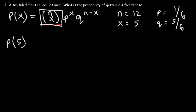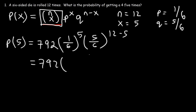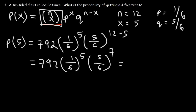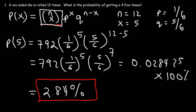So P of x, where x is 5, equals 792 times p (which is 1/6) raised to the 5th power, times q (which is 5/6) raised to the n minus x, or 12 minus 5. You can plug this into your calculator and get the answer. You should get 0.028425. Multiplying that by 100%, we get approximately 2.84%. That's the probability of getting a 4 five times if we roll a six-sided die 12 times.